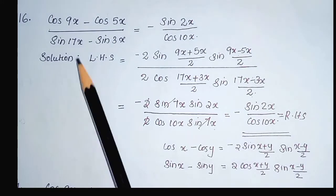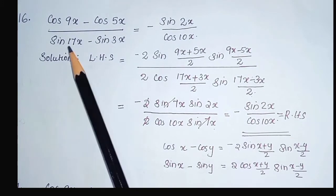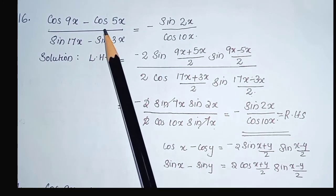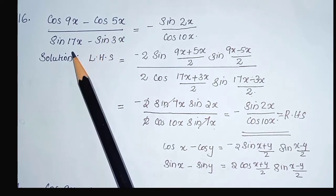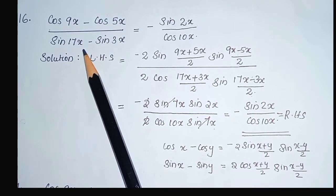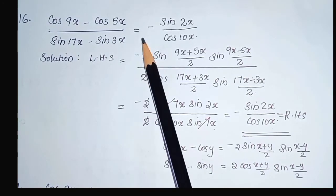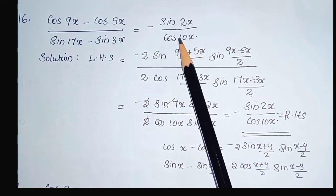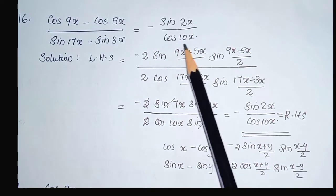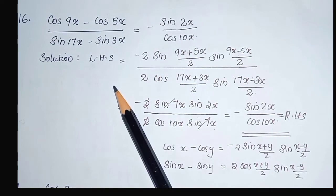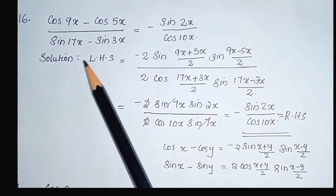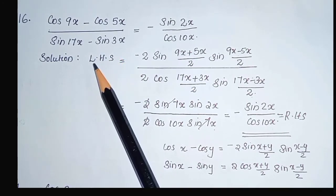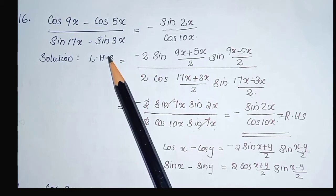First we discuss the 16th question. Cos 9x minus cos 5x divided by sin 17x minus sin 3x equal to negative sin 2x divided by cos 10x. Here, LHS is cos 9x minus cos 5x divided by sin 17x minus sin 3x.